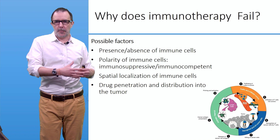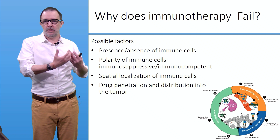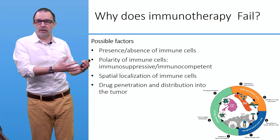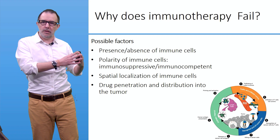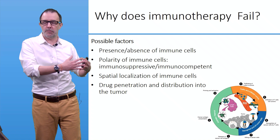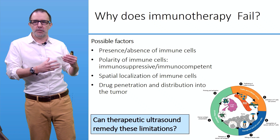Broadly speaking, the possible factors of failure of immunotherapies include: presence or absence of immune cells infiltrating the tumor — if there are no immune cells, a checkpoint inhibitor likely won't increase the response. Even if immune cells are present, their polarity matters — are they more immunosuppressive or immunocompetent? How are they spatially located? And if you give a drug, can it penetrate and be distributed homogeneously throughout the tumor? At every step of the tumor immunity cycle, there are potential points of failure.